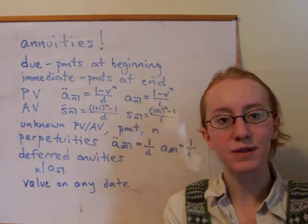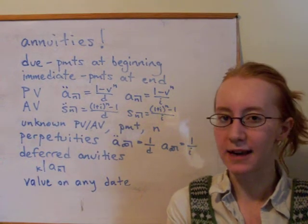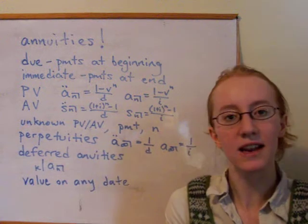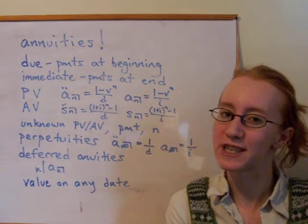And S is what we use for the future value, or the accumulated value of that same cash flow. So there are those four nice results there that we get from the formula for the geometric series.